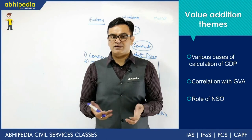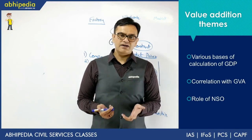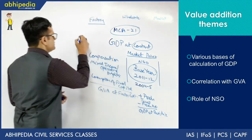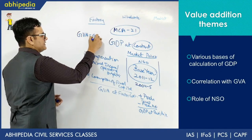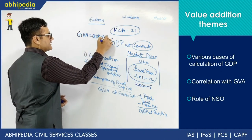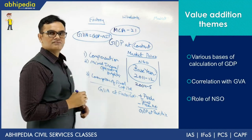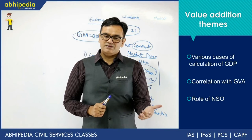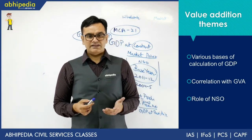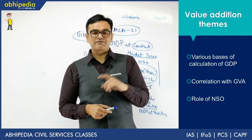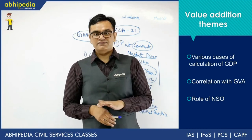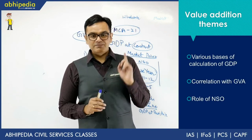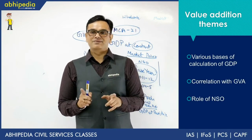The correlation between GDP and GVA is captured by a simple formula: GVA = GDP minus net indirect taxes, where net indirect taxes equals indirect taxes minus subsidies. Don't confuse this with the definition of GVA, which is simply output minus intermediate cost. This formula specifically captures the relationship between GVA and GDP.